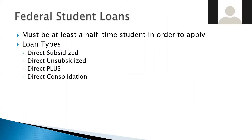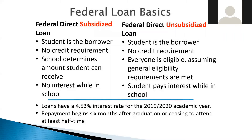Going further into federal loans: you must be at least a half-time student to apply. There are four types of federal loans — direct subsidized, direct unsubsidized, direct PLUS, and direct consolidation. For subsidized versus unsubsidized: in both cases the student is the borrower and there are no credit requirements. For subsidized loans, the school determines the amount the student can receive. The key difference is that there's no interest charged while the student is in school, at least on a half-time basis.